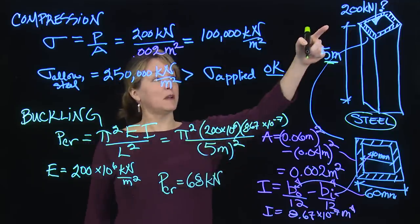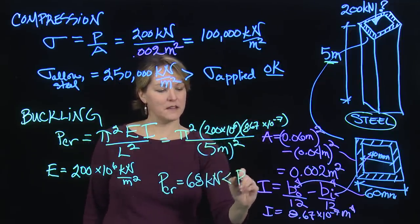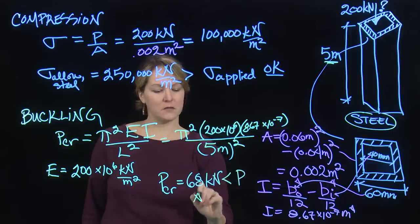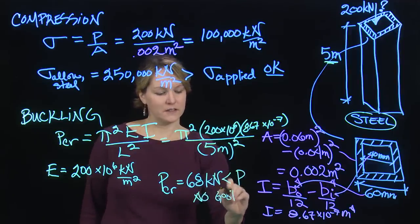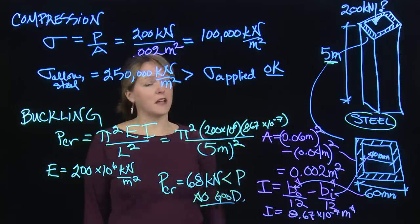which ends up being 68 kilonewtons. 68 kilonewtons, but I want to apply 200 kilonewtons. So this is less than my P that I want to apply. So this column is no good. It's going to fail in buckling. So I need to go back and reevaluate something.